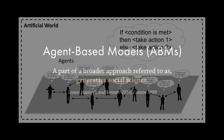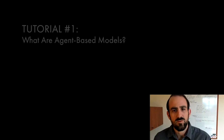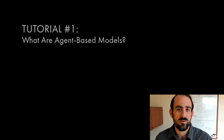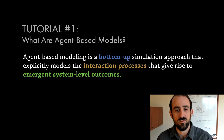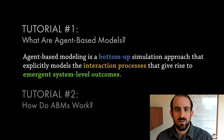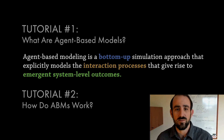This brings us to the end of this first tutorial. A key point I hope you remember is that agent-based modeling is a bottom-up simulation approach that explicitly models the interaction processes that give rise to emergent system-level outcomes. Now that the concepts of agent-based modeling are familiar, the next tutorial will discuss specific components of ABMs and how they work, and provide a range of example applications to highlight the flexibility of the approach. A list of references is provided on the last slide of this tutorial in case you would like more information. I hope this tutorial was useful, and thank you for listening.